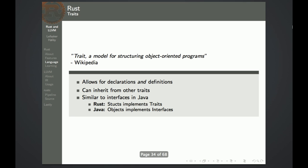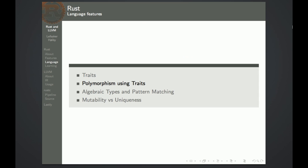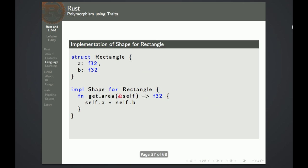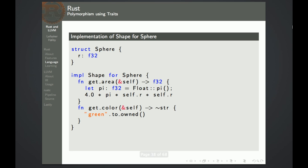Rust uses traits to structure the object-oriented part of the language. Traits allow for both declarations and definitions, and traits can inherit from other traits. It's similar to interfaces in Java. Here we have declared a shape trait and a function get_area that every shape has to implement. We also define a get_color function and a print function that all shapes automatically inherit. We can then make a rectangle struct that implements shape, and also define a sphere struct implementing the shape trait. Sphere has to implement the get_area function, but we also choose to override the get_color function to return green instead of red.